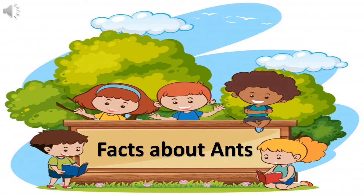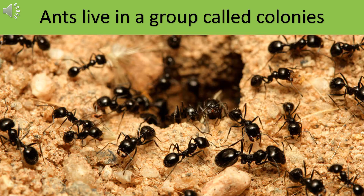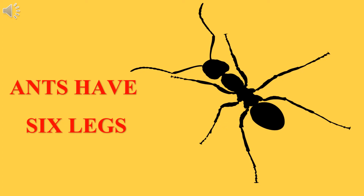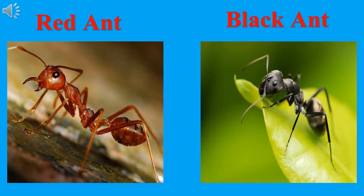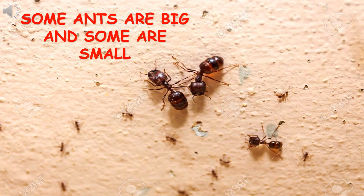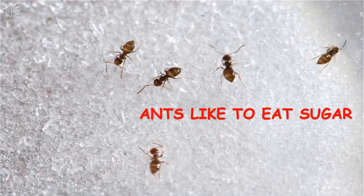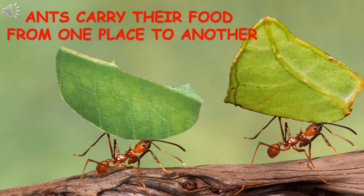Children, let's learn some facts about ants. Ants always live together in groups. These groups are called colonies. Ants have six legs. Ants are of many types. There are red ants and black ants. Some ants are big and some are very small. Do you know what the ant likes to eat? Ants like to eat sugar. Ants can carry their food from one place to another.